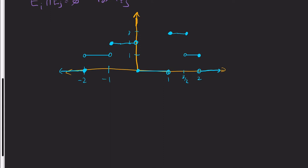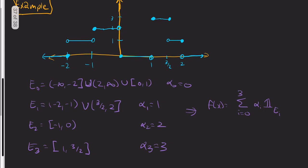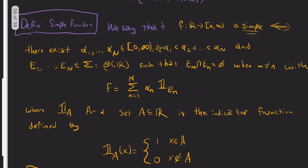E_0 is Q complement - a measurable set. α_0 is 0. E_1 is Q. α_1 is 1. Also notice, in this definition, I ordered the alphas, but you don't technically have to do that, because it's finite. If I called α_1 2 and α_2 1, then all I'd have to do is relabel everything. It's a 'there exists' statement.